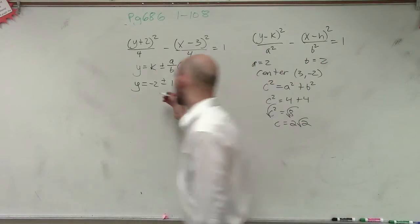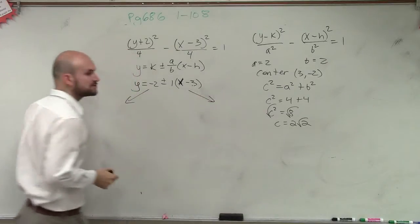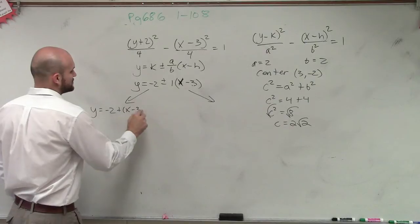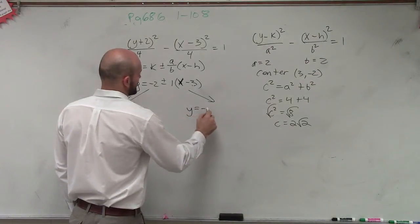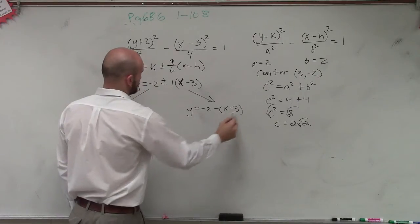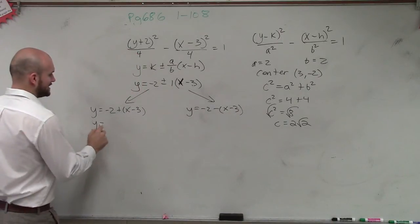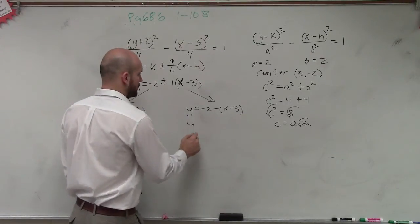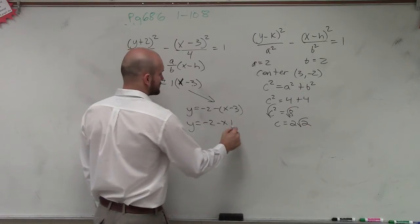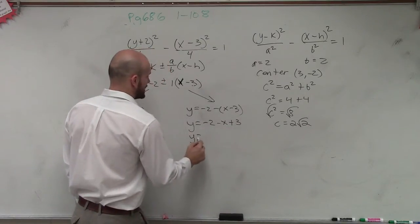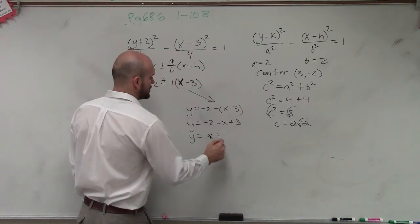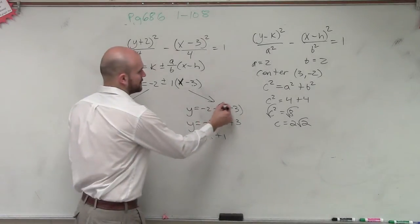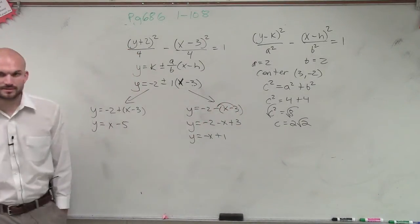So now let's do both asymptotes. So let's do the positive one and the negative one. So I have y equals negative 2 plus x minus 3, and y equals negative 2 minus x minus 3. So therefore, I have y equals x minus 5. And here, I have y equals negative 2 minus x plus 3, so y equals negative x plus 1. I distributed the negative sign to both of those terms, and then I combined them.